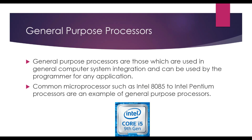General purpose processors are those which are used in general computer systems and can be used by the programmer for any application. This means processors like i3, i5, and Pentium that you use in your computer fall under general purpose processors.